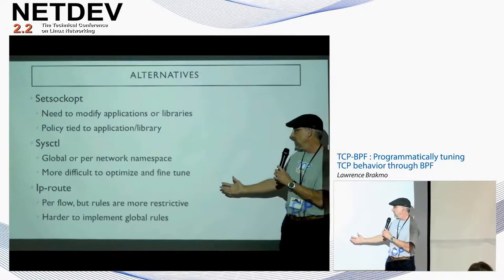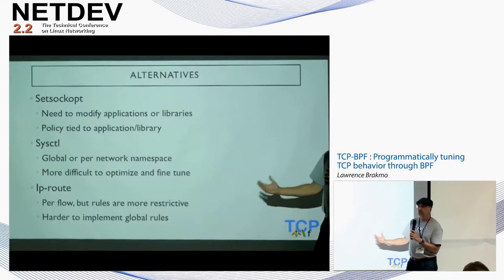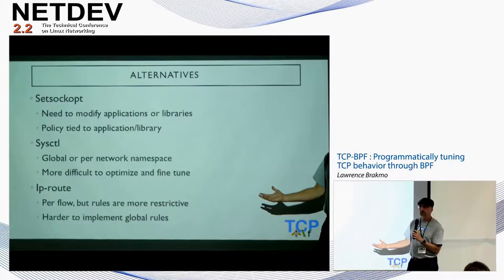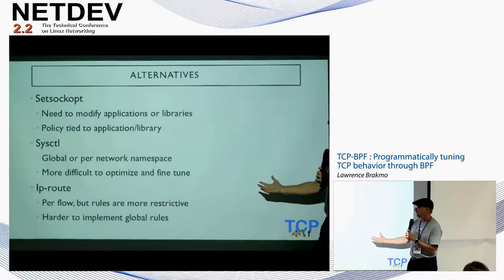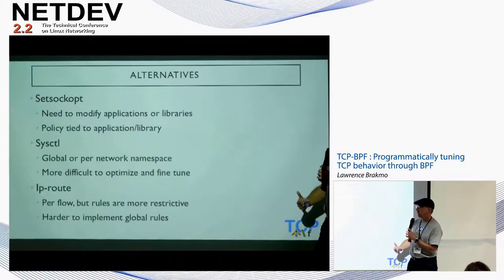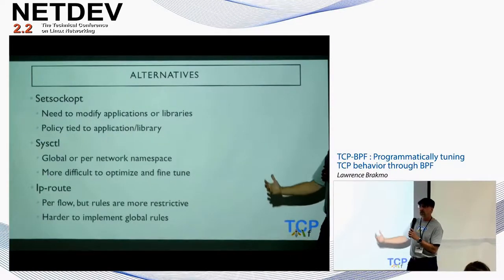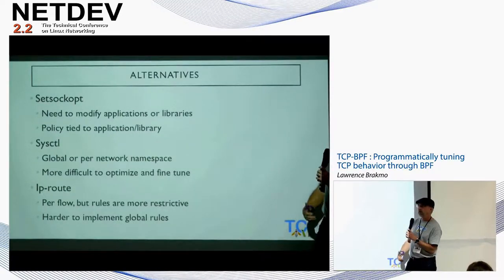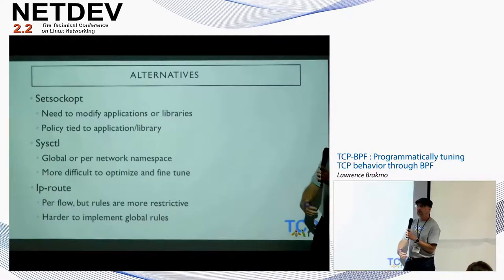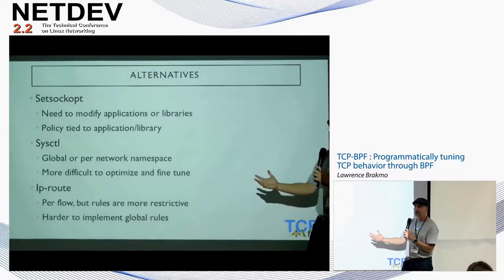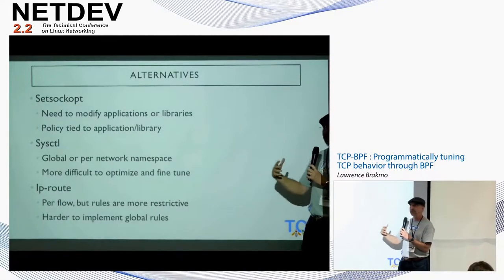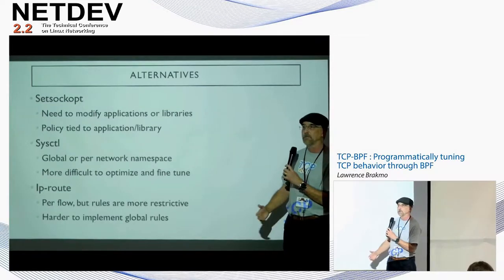We can also use IP route, but then the rules are more restrictive. In many instances, if you're using IP prefixes to decide whether two hosts are in the same data center, you may need to change your rules if things change — like if you now have a new IP address class, now it's not only a prefix match but something different.